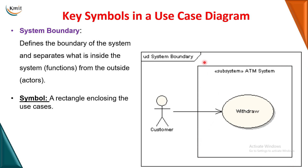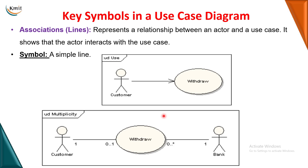The next symbol is the system boundary. The rectangular box you see here is the system boundary. We use the system boundary to separate actors from the use cases. Use cases will be inside the system boundary; actors will be outside the system boundary.